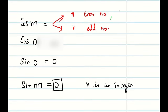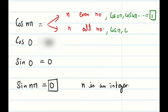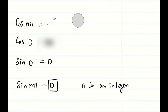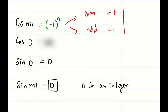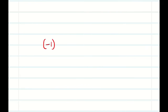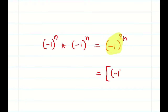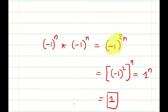If n is even, cos(n pi) equals 1, like cos(2 pi) or cos(4 pi). If n is odd, cos(n pi) equals minus 1, like cos(pi) or cos(3 pi). So when n is an integer, cos(n pi) can be written as minus 1 to the power n. Also, minus 1 to the power n times minus 1 to the power n equals minus 1 to the power 2n, which equals 1 to the power n, giving simply 1.